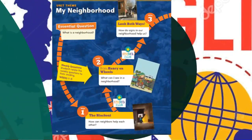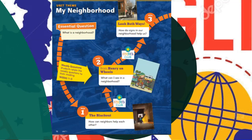This is a roadmap for the first unit, or the first theme, which is My Neighborhood. The essential question for the unit is: what is a neighborhood? In this unit we will be introduced to different texts and different genres like realistic fiction and informational text. The first story we will read is The Blackout, and the essential question is: how can neighbors help each other?